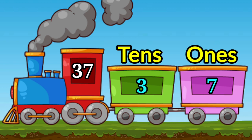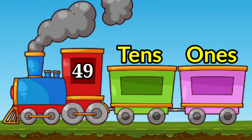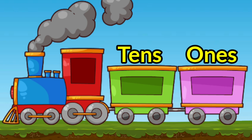Now we have four nine, forty nine. Nine will go in ones place and four will go in tens place. Children, which number do we have now? We have two four, twenty four. So four will go in ones place and two will go in tens place.